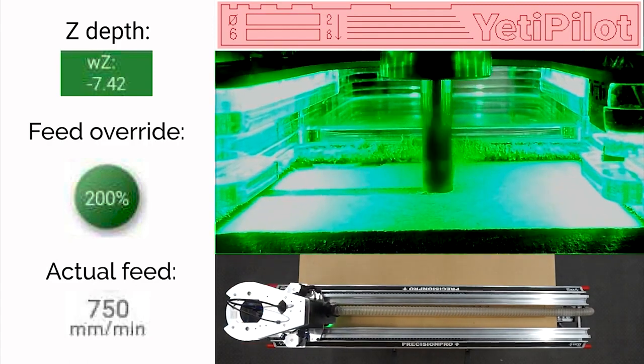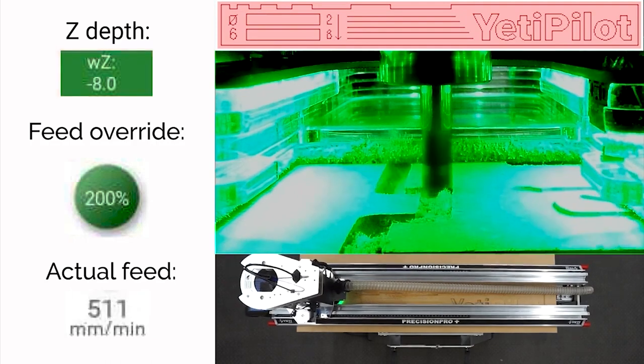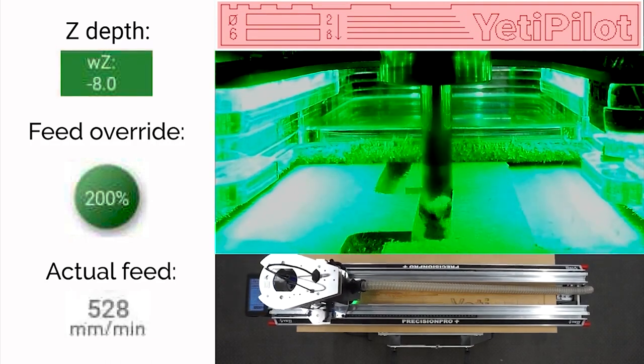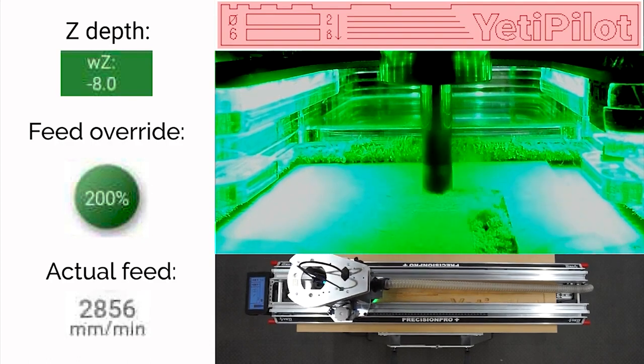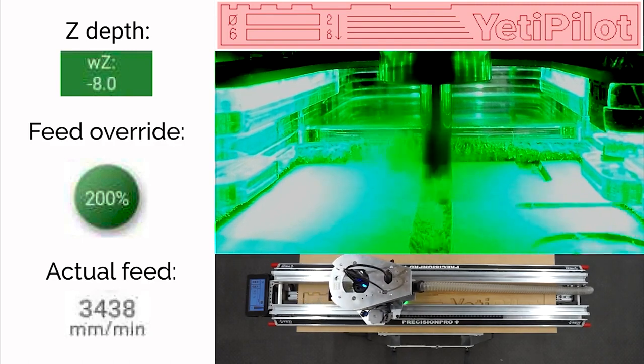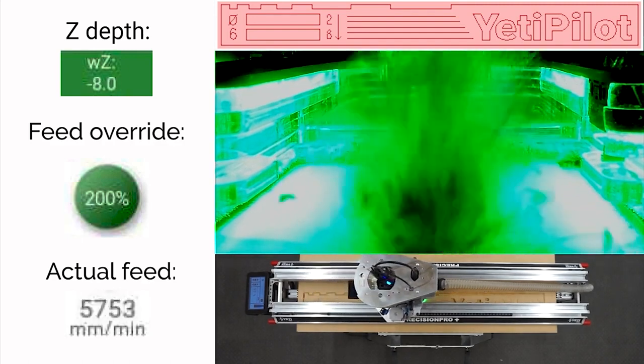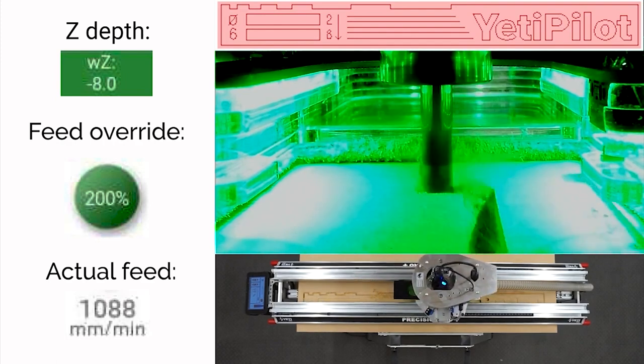The second pass will dive to a full eight millimeter depth. This will be the last step and at some stage we're going to see a couple of tabs. These are 3D profile tabs so we'll see the Z lift, there it is, there's one of them. Fantastic shot from cutter cam here collecting all that dust. Second tab coming up.